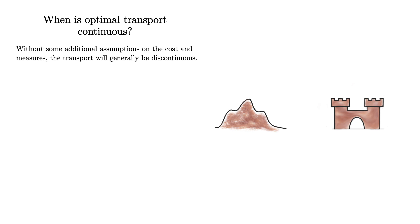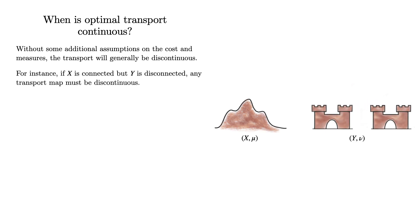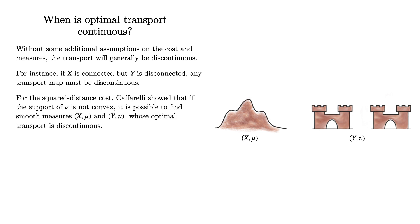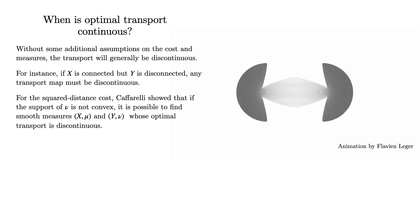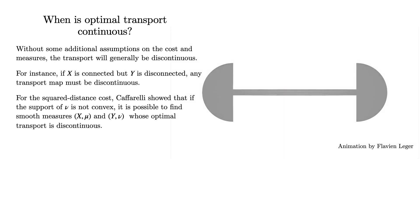Unfortunately, without making some additional assumptions on the cost and measures, this is not possible to do. For instance, if X is connected, but Y is disconnected, there are no continuous transport maps at all. Continuity can also fail, even when there are no topological reasons preventing it. For the squared distance cost, Caffarelli showed that if we take the uniform measure on the disk and transport it to the uniform measure on a barbell, there are two fork-like segments at the top and the bottom of the disk, where the transport is discontinuous. More conceptually, this shows that non-convexity of Y is a global obstruction to regularity. In other words, when Y is not convex, we can always find smooth measures μ and ν for which the transport has some discontinuities.